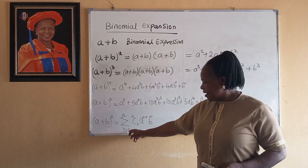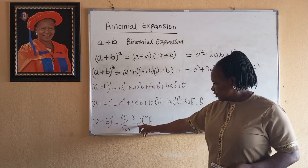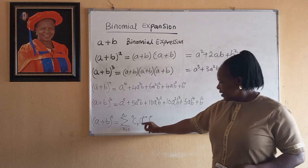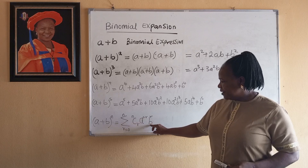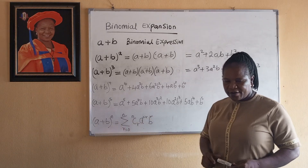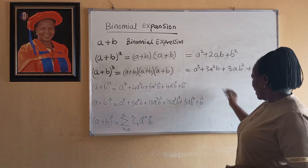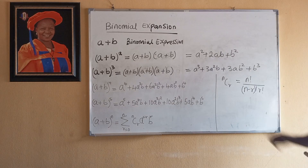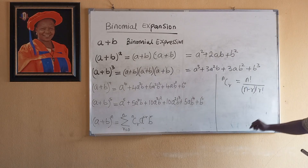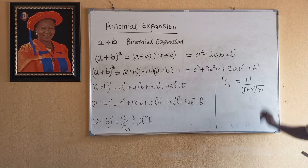A plus B raised to the power N is equal to the summation from R equal to 0 to N of N combination R, A raised to the power N minus R, B raised to the power R. N combination R is given as N factorial over (N minus R) factorial times R factorial.